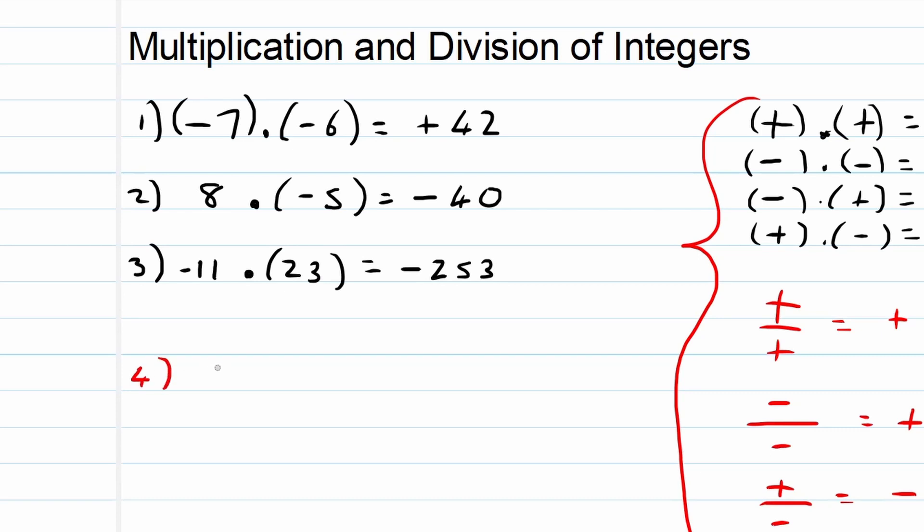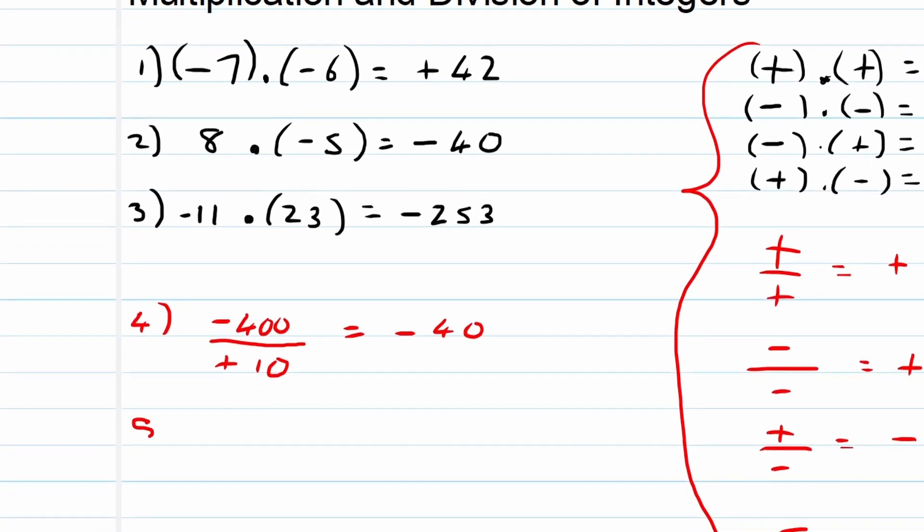Example four: minus 400 divided by a positive 10. A negative divided by a positive is a negative, and 400 divided by 10 is equal to 40. You can see the same rules apply now for multiplication and division.